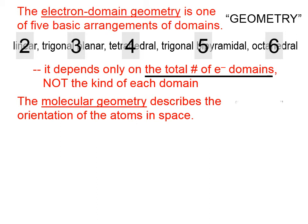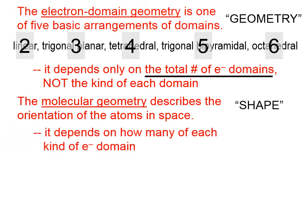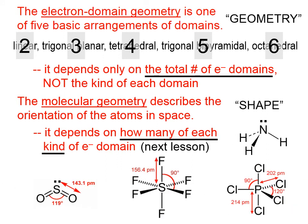Now the molecular geometry, or the shape of the molecule, describes the orientation of the atoms in space. So the shape, or the molecular geometry, does depend on how many of each kind of domain. Are they all bonding domains? Are there two bonding and two nonbonding, et cetera? This is the topic for another lesson. So we're not going to go into those details here.